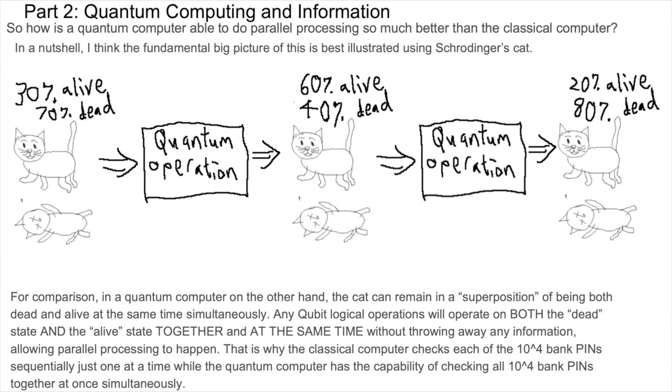That is why the classical computer checks each of the 10 to the fourth bank PINs sequentially just one at a time, one after the other, while the quantum computer has the capability of checking all 10 to the fourth bank PINs together all at once simultaneously.